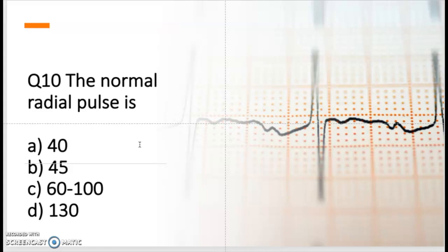The normal pulse is within 60 to 100 beats per minute. 40, no. 45, no. 60 to 100 is the normal pulse, and that's the correct answer. 130 is too high, that's out of the parameters.